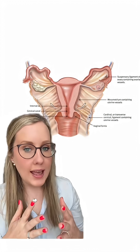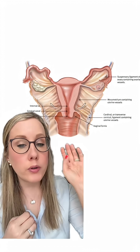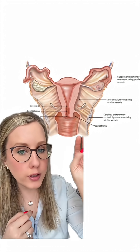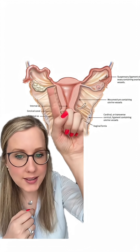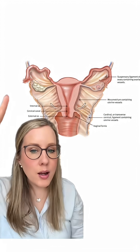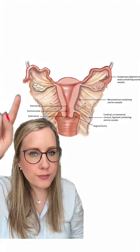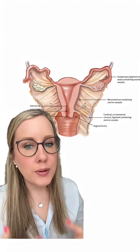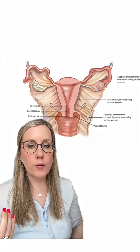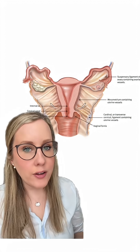When we do a hysterectomy — where we remove the uterus — what we're doing is cutting this ligament right here, but leaving this one over here alone. So your ovaries are basically still in the same place as they were before, and you are still ovulating from them.